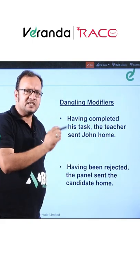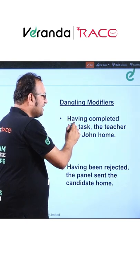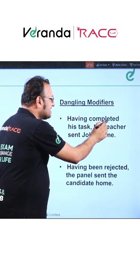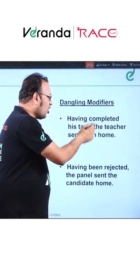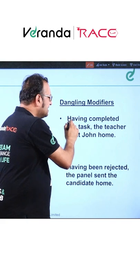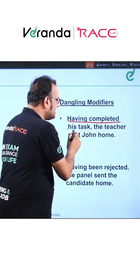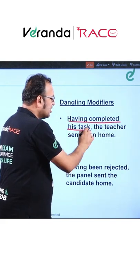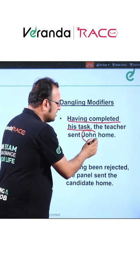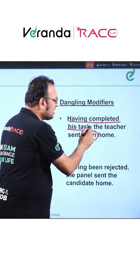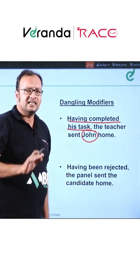Don't you think this sentence confuses us? Because we are not able to identify who has completed his task — the teacher or John. This is the dangling modifier. So after the comma, we mention John. We place John after the comma so that the modifier is corrected.